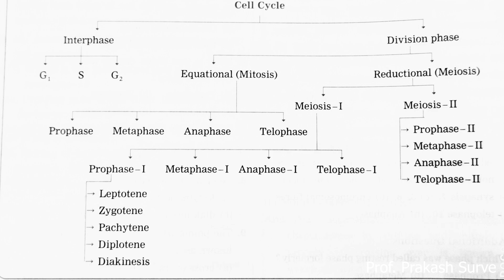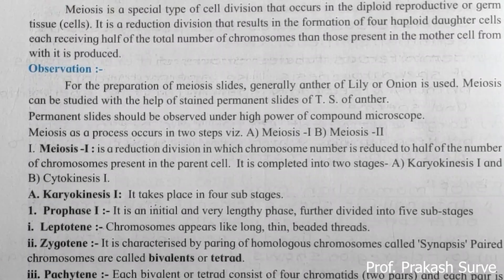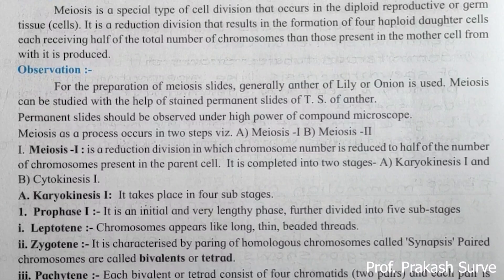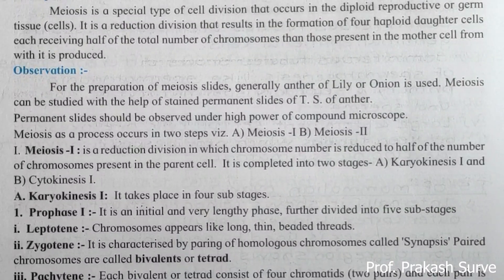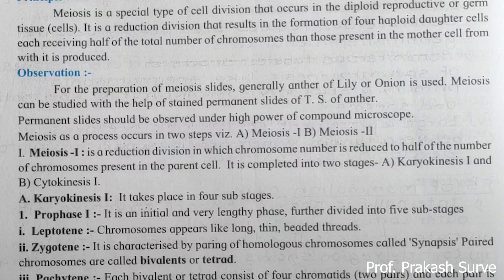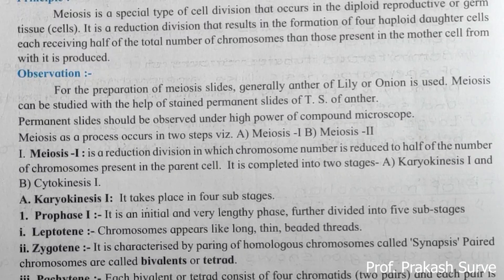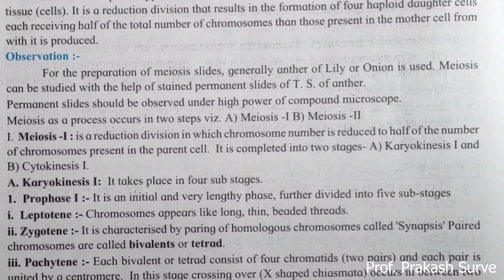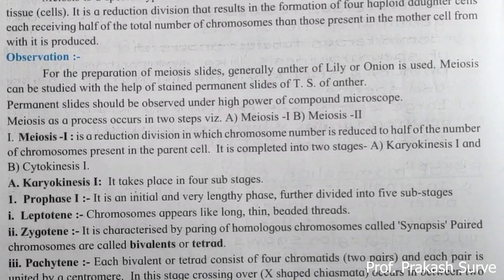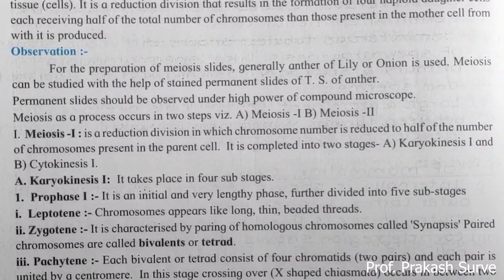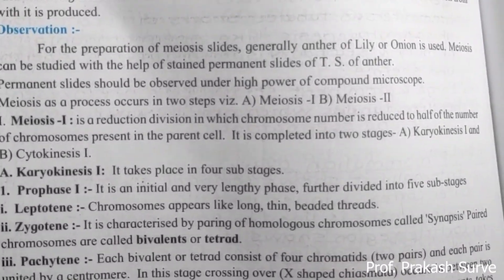Now we will come to the details about meiosis. In meiosis, it takes place in the reproductive cell or germ cell, in which from a single diploid cell we get four haploid daughter cells, which receive half the number of chromosomes. In meiosis there are two particular steps: meiosis one and meiosis two. In the exam, we will get photographs, and with the help of those photographs I will give the explanation.